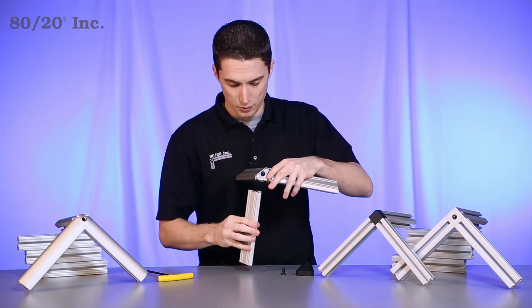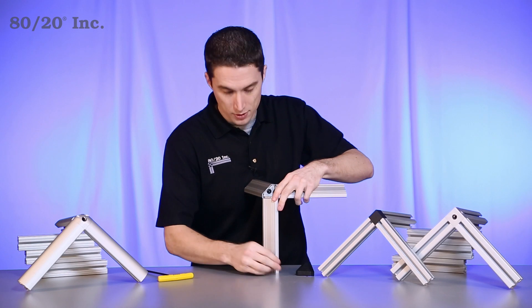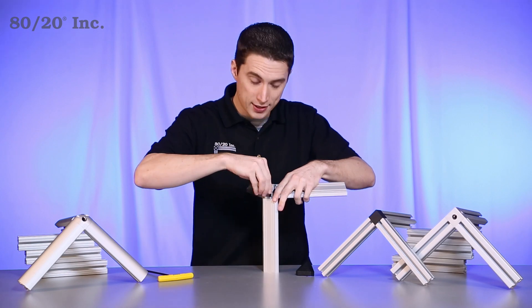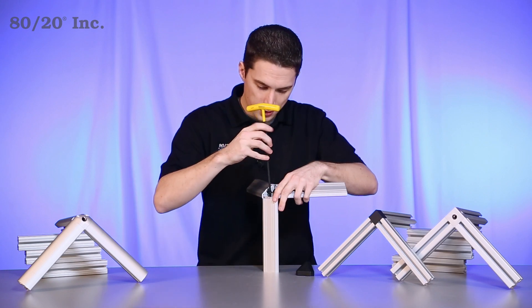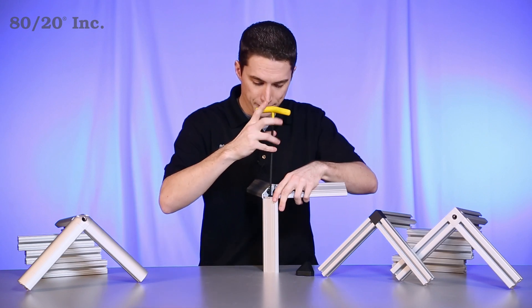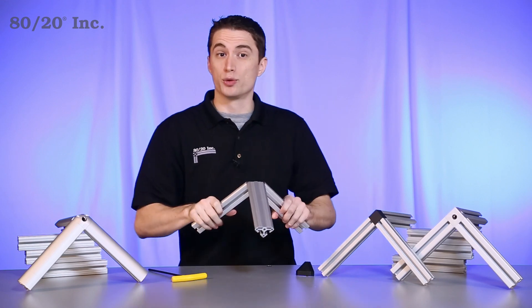To finish it up, we'll take the connector and place it over the last bar, we'll take our bolt and feed it into the end tap, we'll take our wrench and tighten it the rest of the way down. Once you have that locked in, you have one bracket connecting three bars.